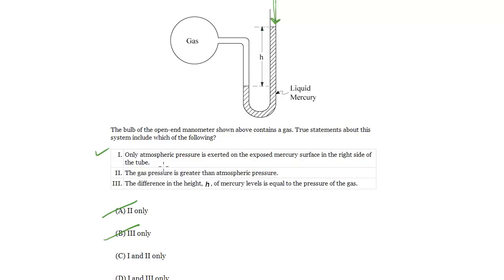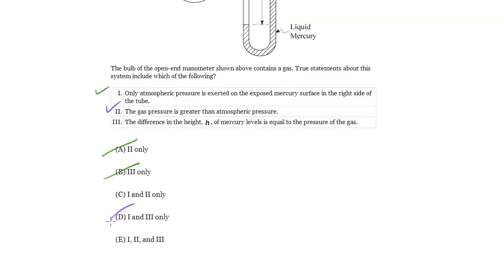Yes, this is indeed true because if it were not, if this gas pressure were lower, then the air pressure would push the mercury up higher in this tube and lower in this tube. But because it's displaced this way, we know statement II is definitely true. We can get rid of answer D.